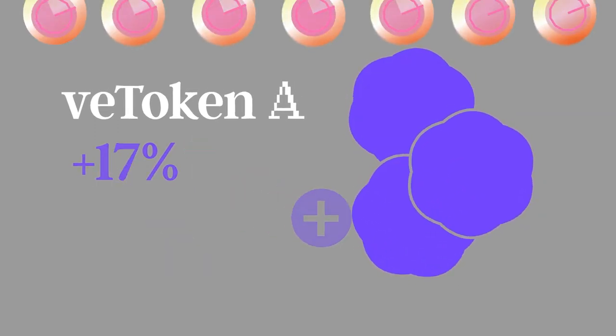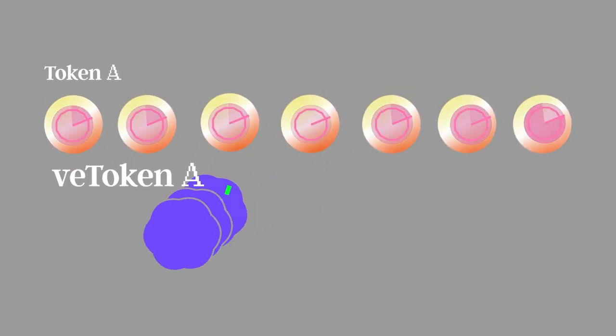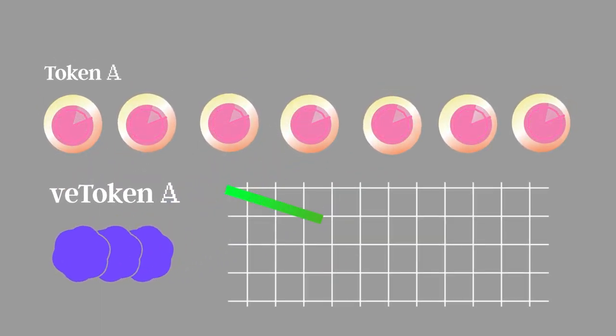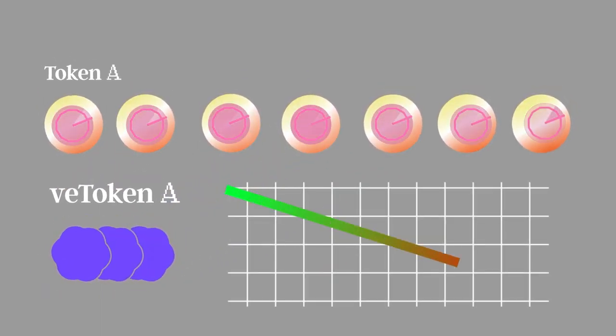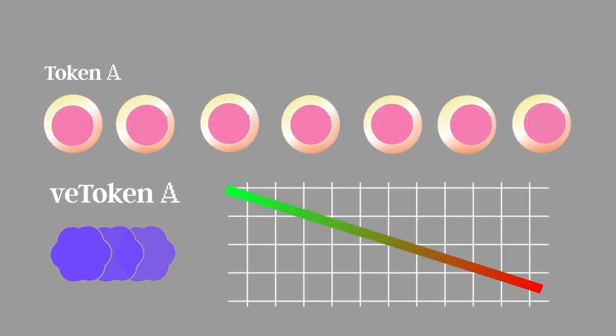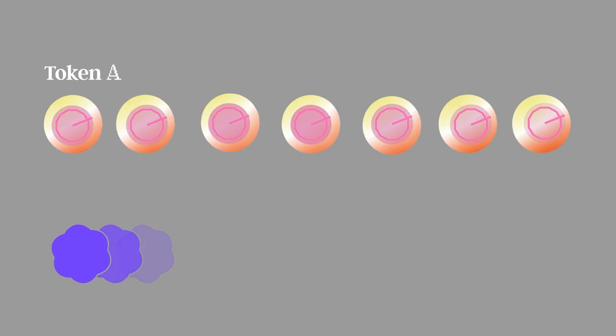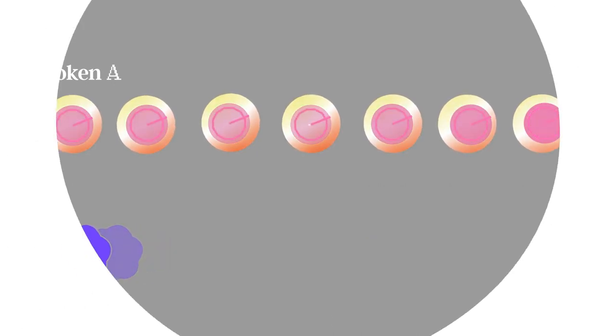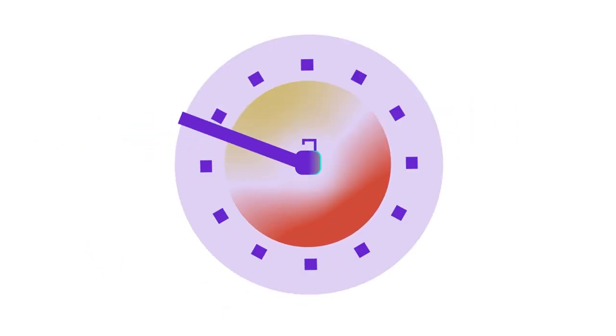As you approach your unlock deadline, your quantity of VE tokens decreases, as do your voting rights, your revenues, and your boosts. Locking for as long as possible provides maximum benefits.